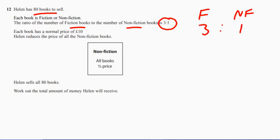I just want to summarize what we've got. Each book has a normal price of £10. Helen reduces the price of all of the non-fiction books. Non-fiction books, all books, are half price.